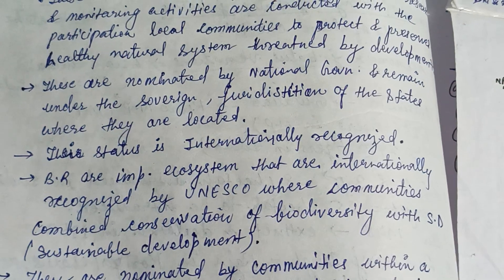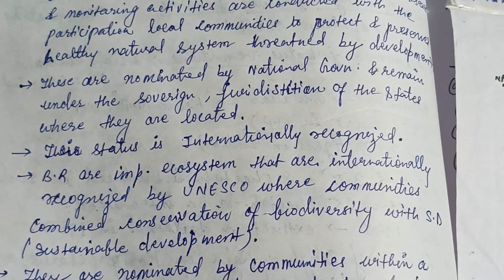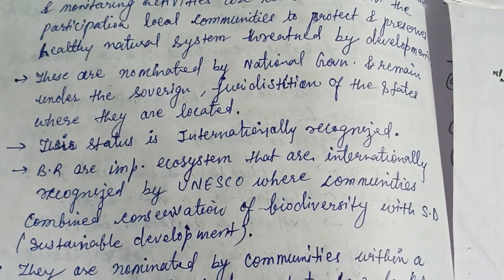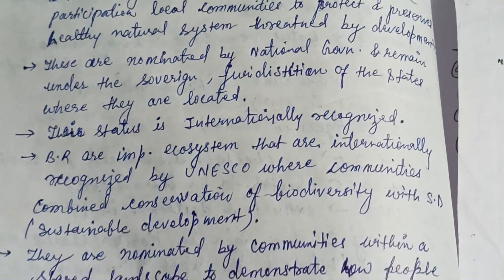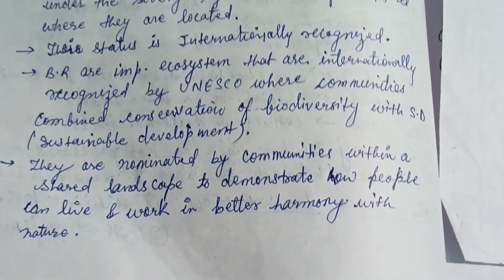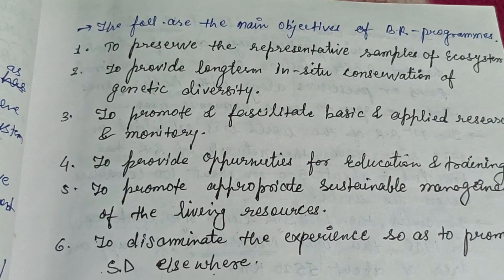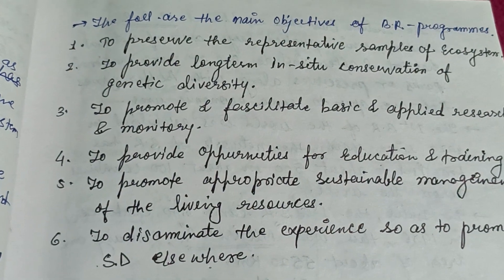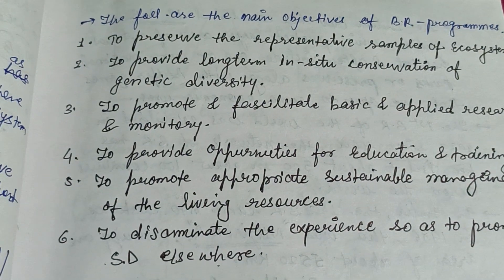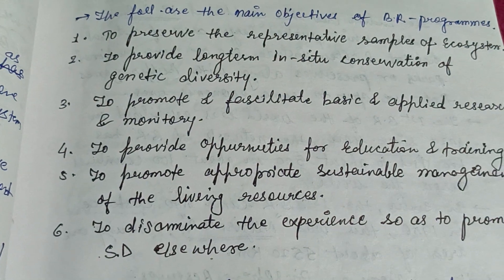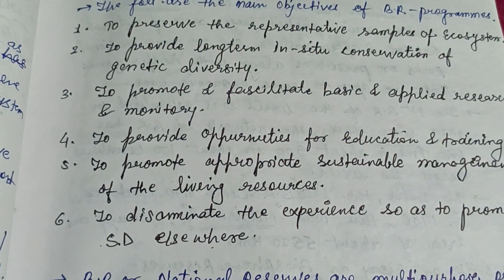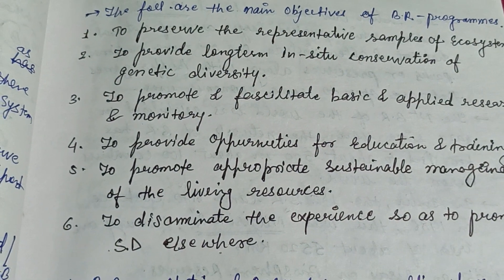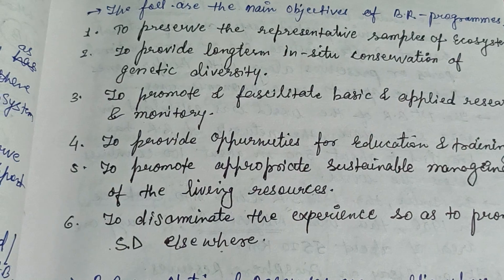There are 18 Biosphere Reserves in India, and the first is the Nilgiri Biosphere Reserve. The main objectives of the Biosphere Reserve Program are to preserve representative samples of the ecosystem and to provide long-term in-situ conservation of genetic biodiversity.